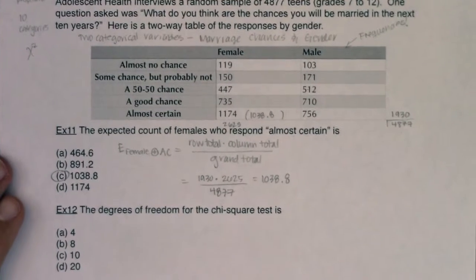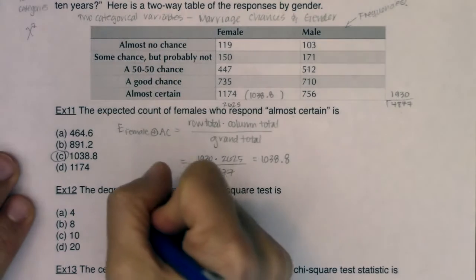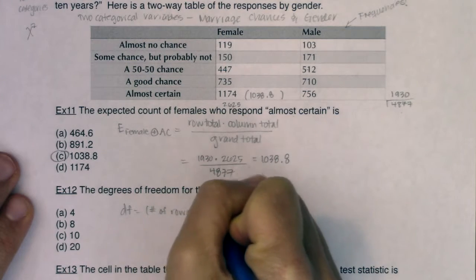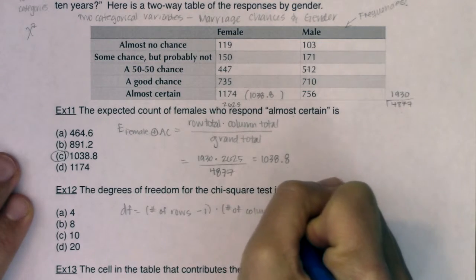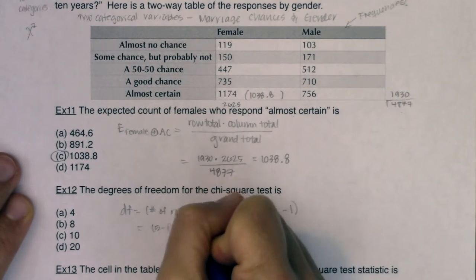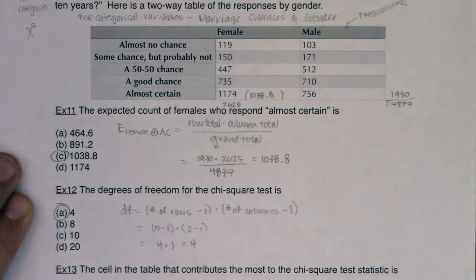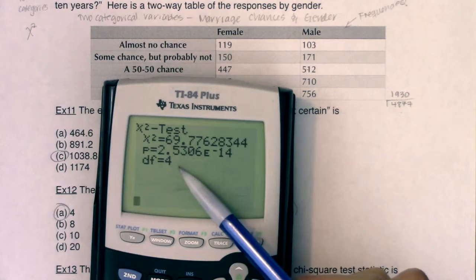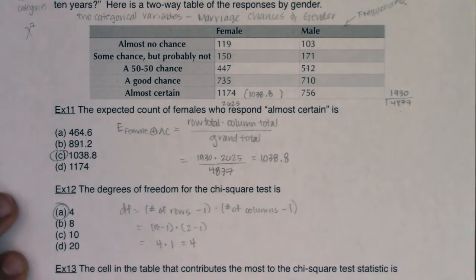Alright, degrees of freedom. So degrees of freedom in the independence version, it's going to be number of rows minus one times number of columns minus one. So we had five rows. And we had two columns. So ultimately, I'm looking at four times one, which is four. And I also could have seen that from the calculator screen output when I ran the chi-squared test, it'll give you your degrees of freedom. So okay, great.